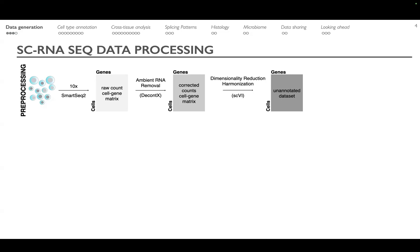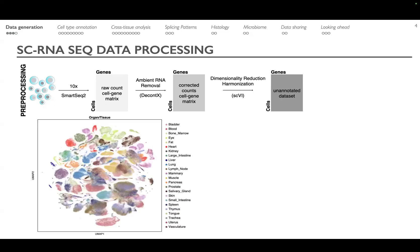We then perform dimensionality reduction and harmonization using scVI to get to a matrix that is still unannotated but allows us to bring all the data into a single latent space that we can start to visually inspect. After this initial pre-processing, the first metadata variables we can start looking into include tissue overlap and distribution on the UMAP.